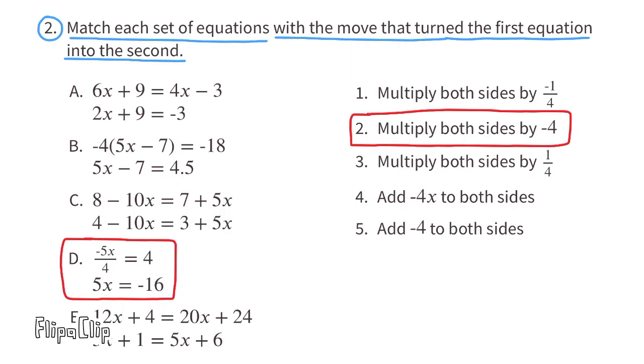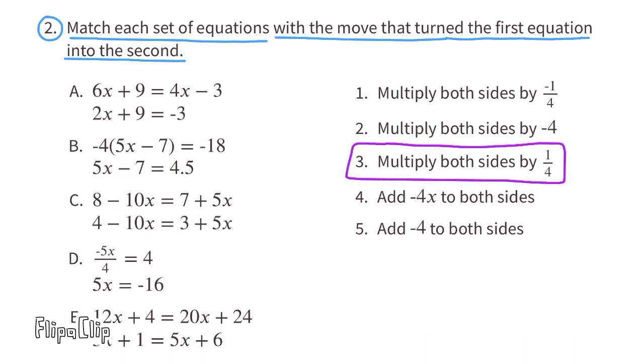And finally, the equations for E. Let's just look at the right side of the equals sign. It goes from a 20x plus 24 down to a 5x plus 6. 5x is 4 times smaller than 20x, and 6 is 4 times smaller than 24. It looks like they've multiplied both sides by 1 fourth. The steps for 3 match up with the equations for E.